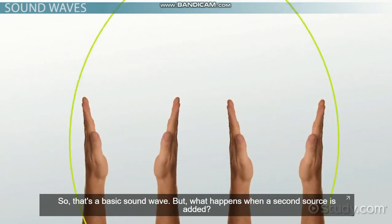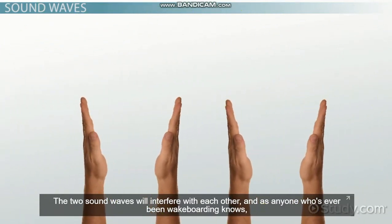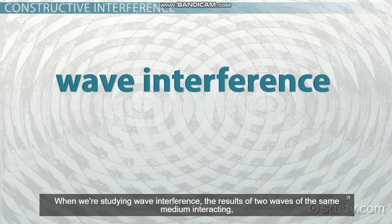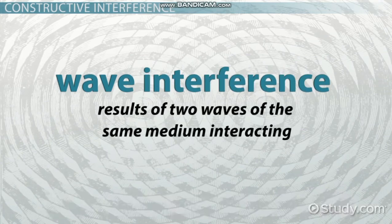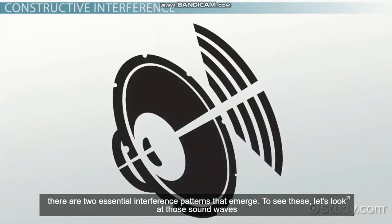But what happens when a second source is added? The two sound waves will interfere with each other. As anyone who's ever been wakeboarding knows, when waves mix, things can get a bit choppy. When we're studying wave interference—the result of two waves in the same medium interacting—there are two essential interference patterns that emerge.